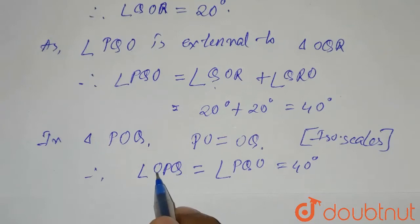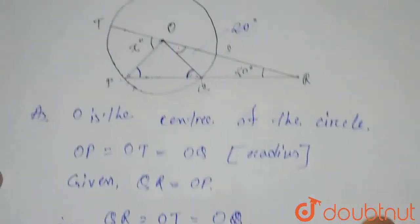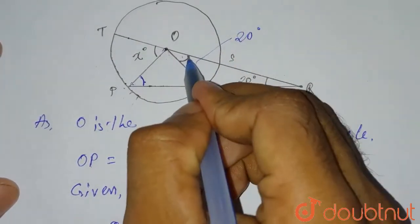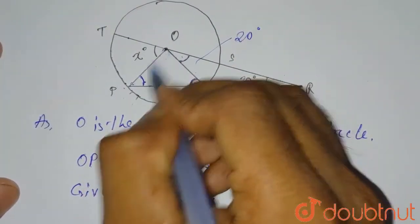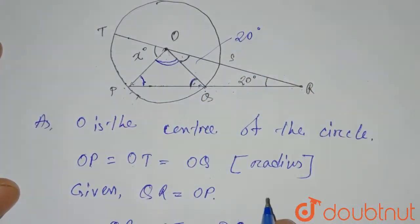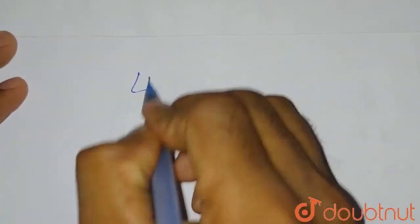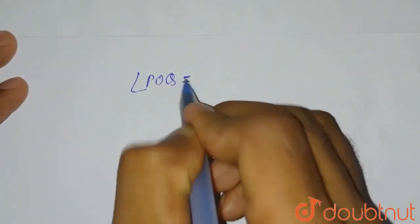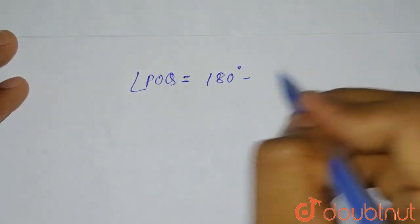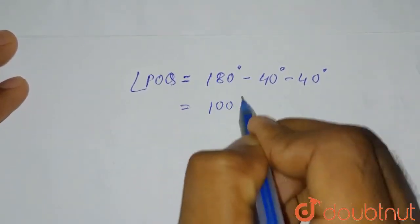We have proved that angle OPQ and angle PQO are both 40 degrees. So this angle is 20 degrees, this angle is 40 degrees, and this angle is 40 degrees. Therefore angle POQ equals 180 degrees minus 40 degrees minus 40 degrees, which equals 100 degrees.